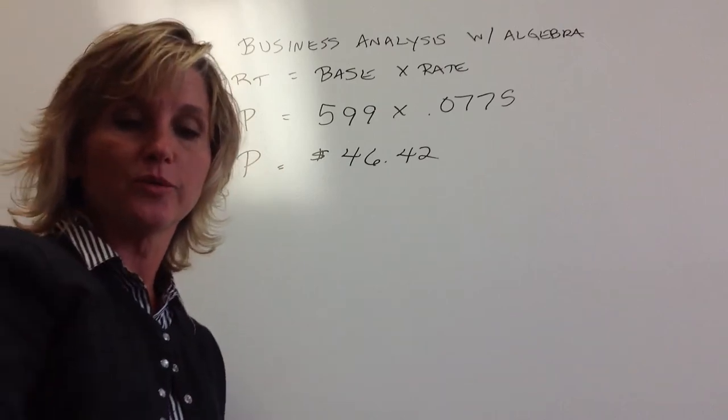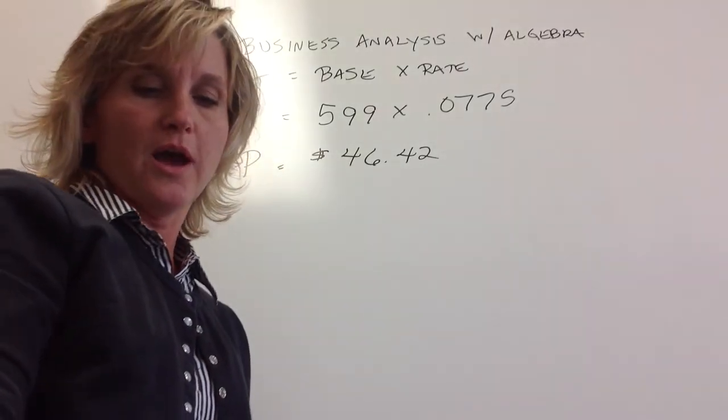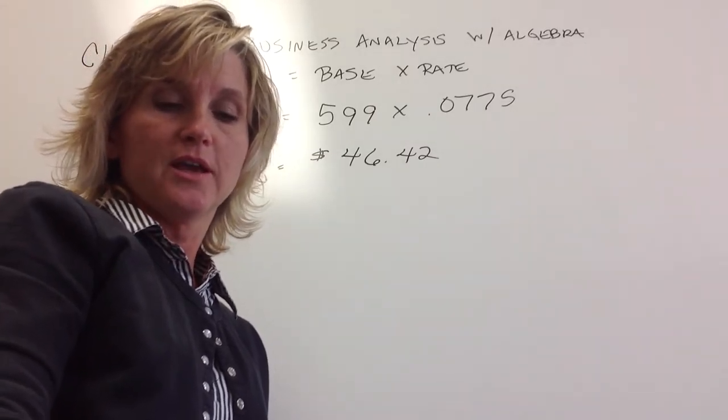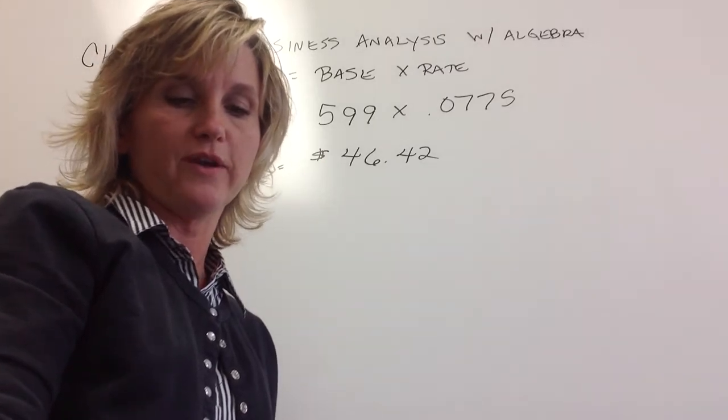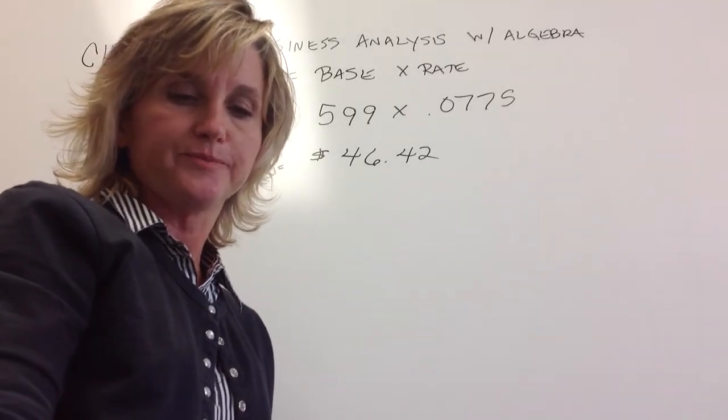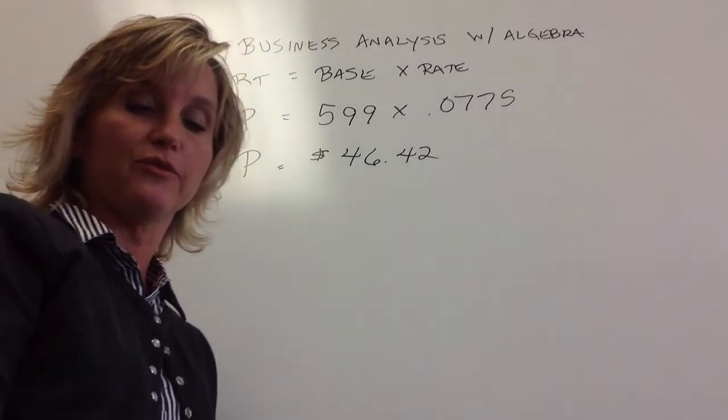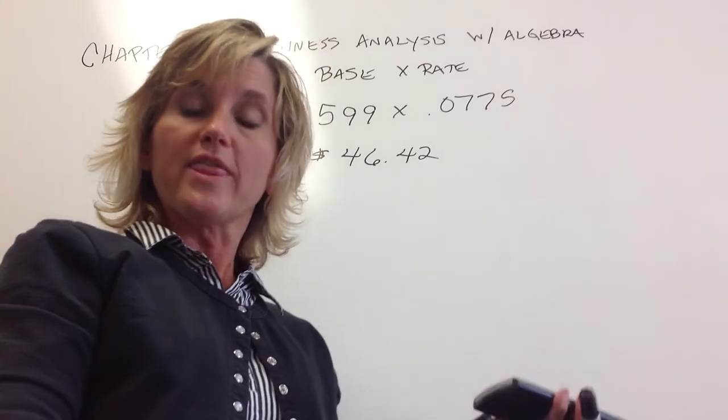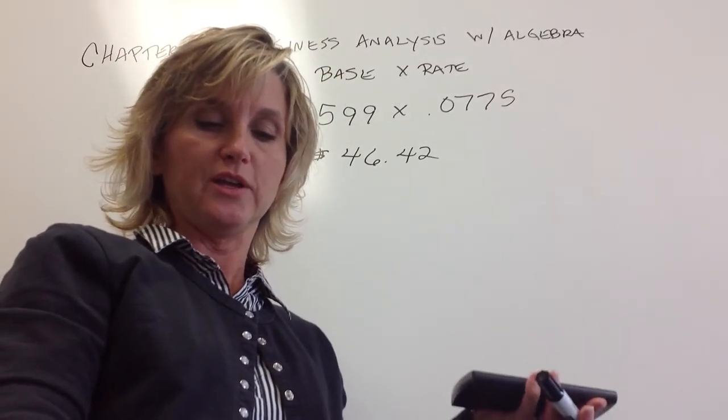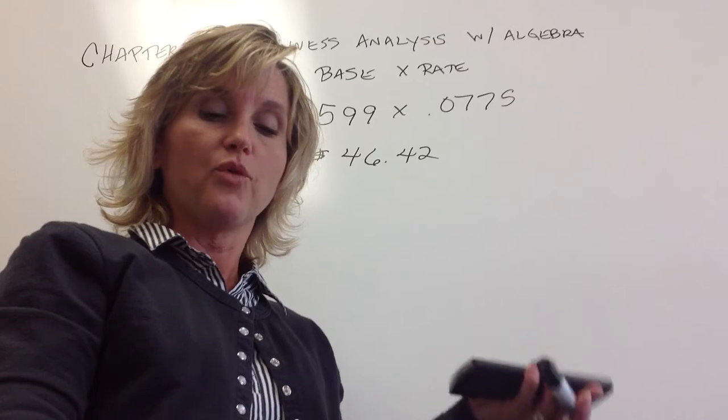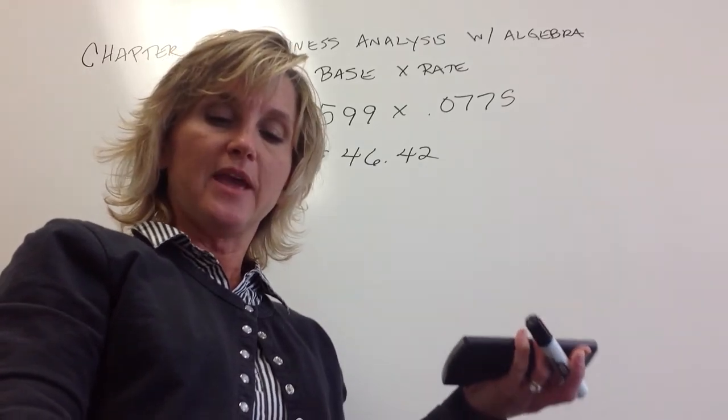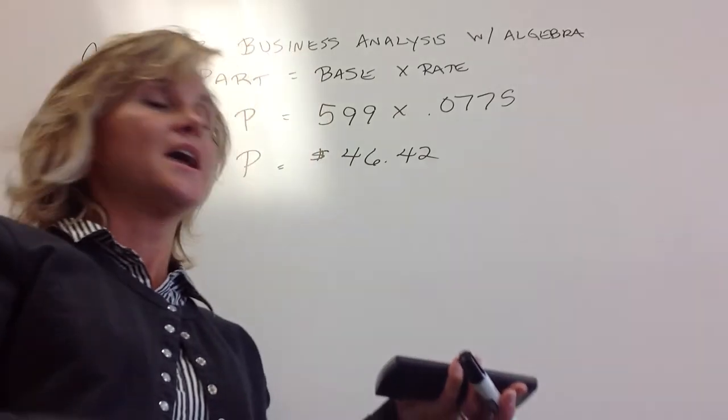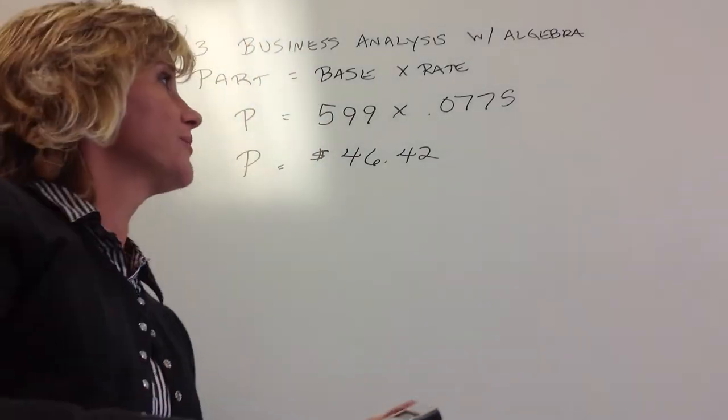Then sometimes the harder ones are when we're actually looking for the base, where they give us the part and then they give us a rate and we're solving backwards. So then I'm going to pull an example from that, and it deals with student debt. If there's 1,843 college students that have more than $10,000 in student loans, and that is 36.7% of the entire group of college students, how many college students are there?